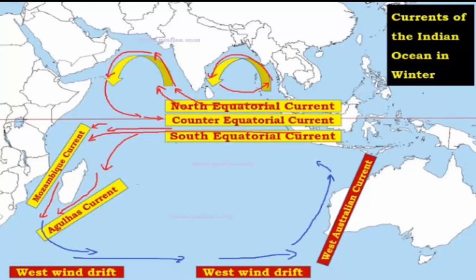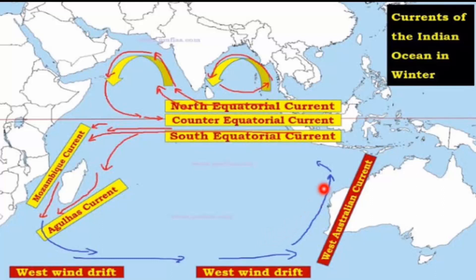These are the currents of the Indian Ocean in winter. You can see the North Equatorial Current here, then the Counter Equatorial Current. After that you can see the South Equatorial Current, which goes through the Mozambique Current and the Agulhas Current. You can also see the West Wind Drift and the West Australian Current. Some of these are cold currents and some are warm.